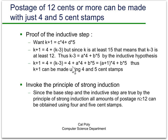So we write k+1 = 4 + (k−3). Then for k−3, since we can write it as a sum of 4-cent and 5-cent stamps, we substitute that in, reorganize, and we've shown that k+1 can be written as a combination of 4-cent and 5-cent stamps. We're not quite done, but we've done all the hard work. We now invoke the principle of strong induction: since the base step and the inductive step are both true, by strong induction all amounts of postage for n ≥ 12 can be obtained using 4-cent and 5-cent stamps.